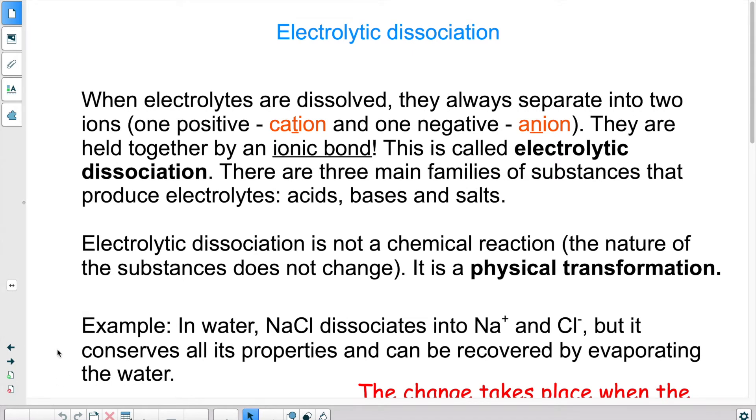Now when we put an electrolyte in water, those electrolytes will dissolve and as a second step they will separate. So they'll break into two parts, two ions. So one positive, one negative. The positive is a cation. The negative part is called an anion and you can see that I underlined the T and the N. It's just a memory aid to remember which is which.